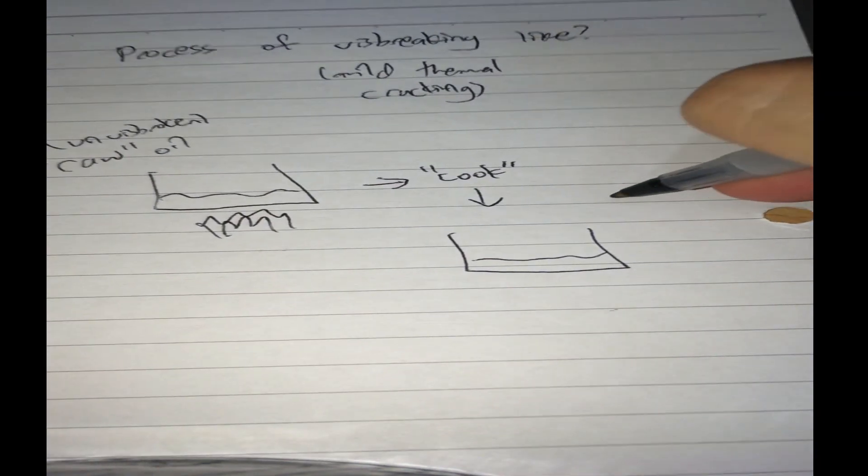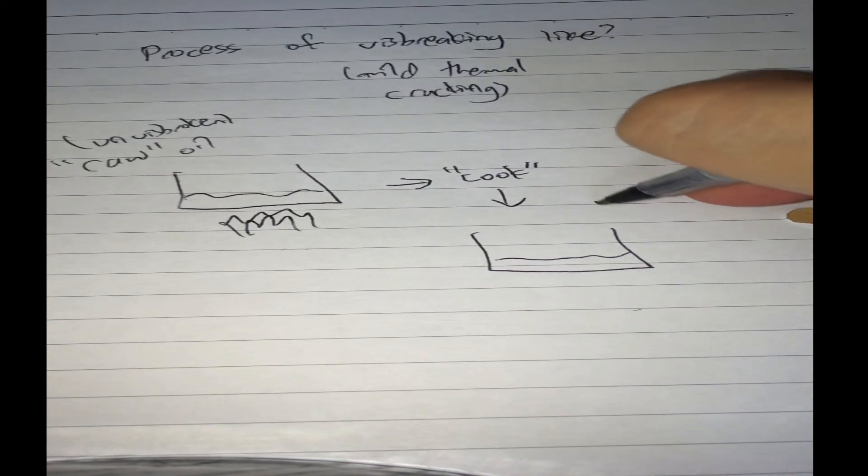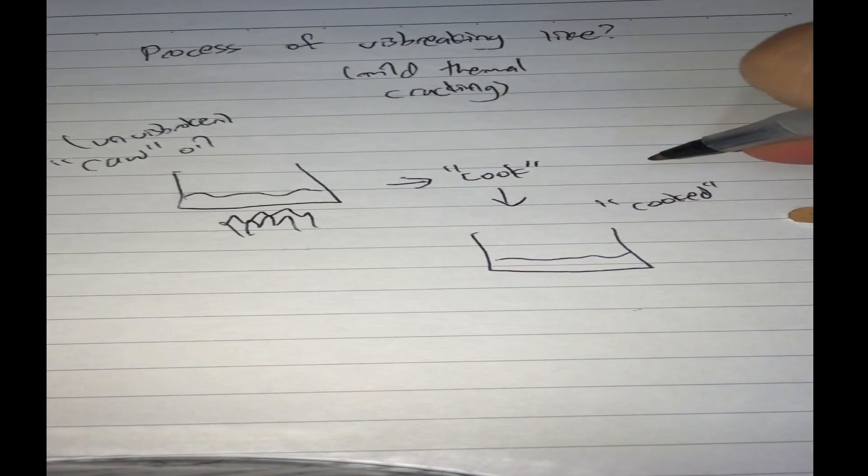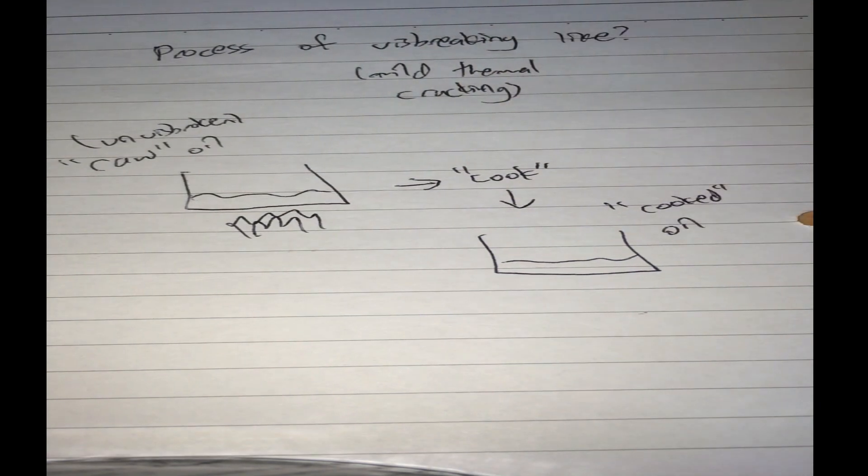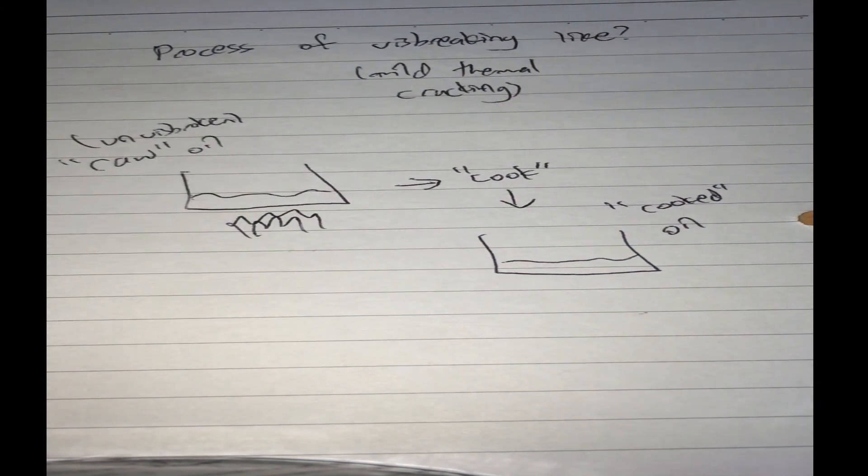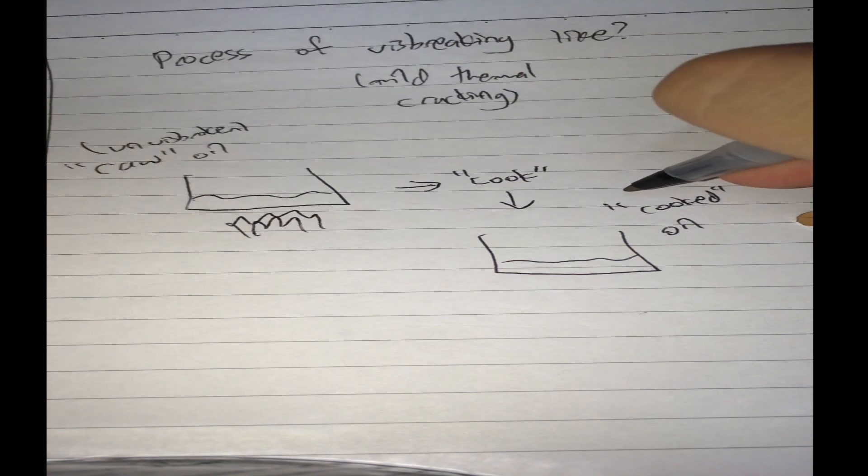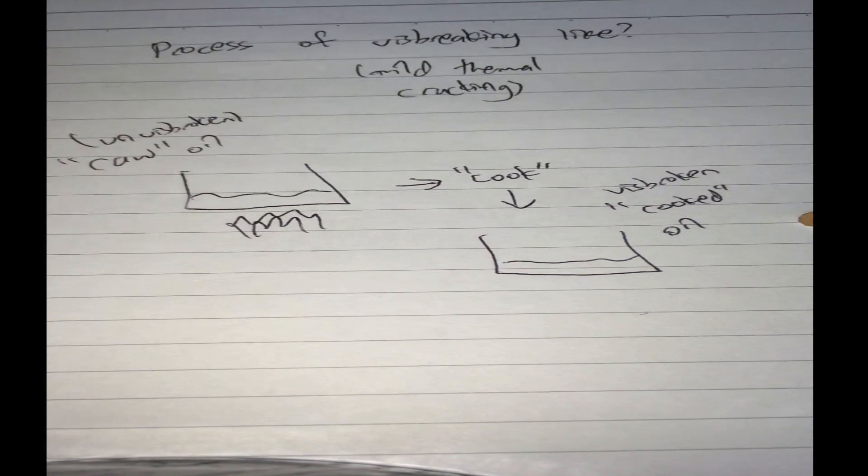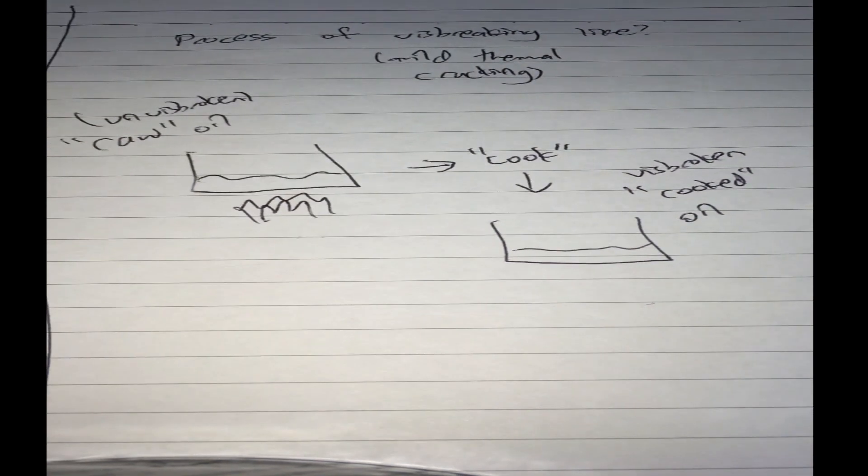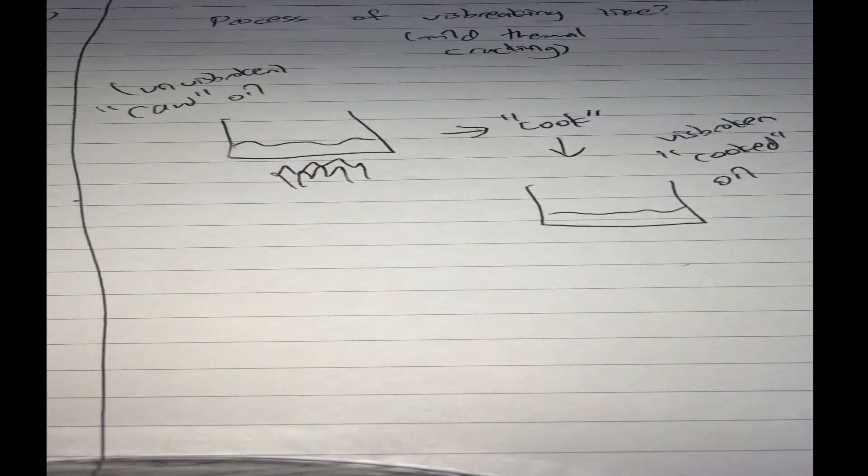And you have cooked, so-called cooked oil, and you want it just nice. You don't want to overcook it and you don't want to undercook it. So this is visbroken oil or visbroken residue that's suitable for less cutter stock to be able to blend in.